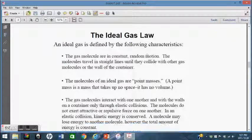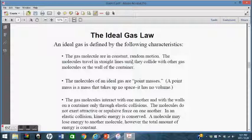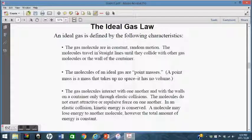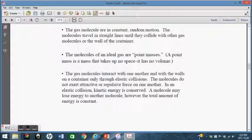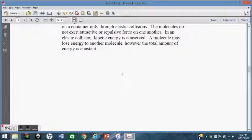So this takes us to the second part of your notes, which is the ideal gas law. An ideal gas is defined by these characteristics. We actually looked at these yesterday. Three major characteristics. Gas molecules are in constant random motion. The molecules travel in straight lines until they collide with other gas molecules or with the walls of the container. We assume that the molecules of an ideal gas are point masses. Mass that takes up no space has no volume. And molecules interact with one another and with the walls only through elastic collisions. They don't exert attractive or repulsive forces on one another. In that elastic collision, the kinetic energy is conserved. A molecule might lose energy to another molecule, but the total amount of energy is constant, which means that in any interaction, pressure and temperature don't change.